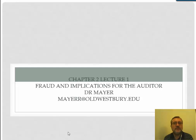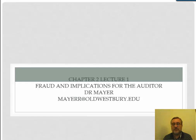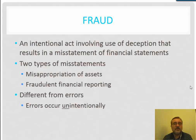Welcome to Lecture 1 in Chapter 2. In this chapter, we're going to talk about several issues related to internal controls. The first aspect relates to fraud and the implications to auditors. Keep in mind that one of the primary things we as auditors do is provide an opinion of the fair presentation of the financial statements. So what we're looking for are material misstatements, whether due to error or fraud.